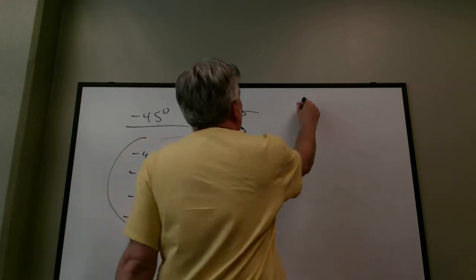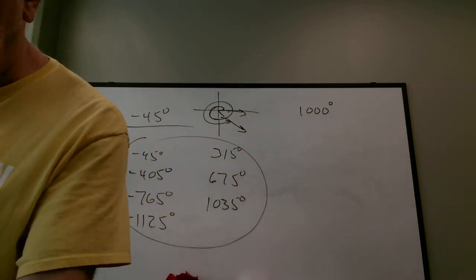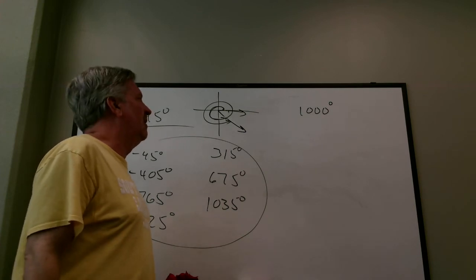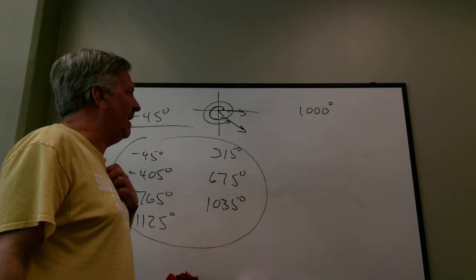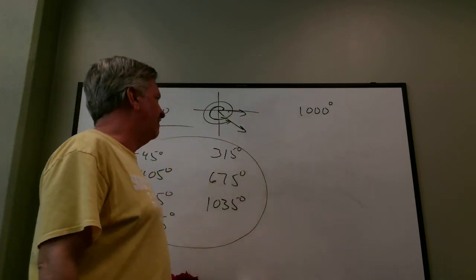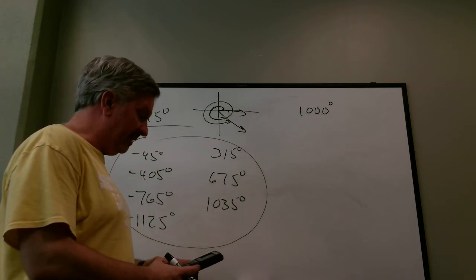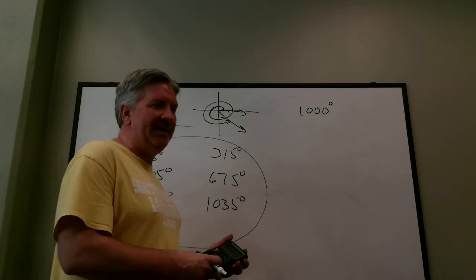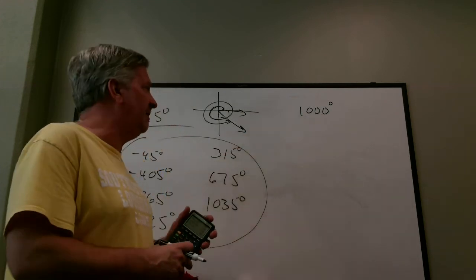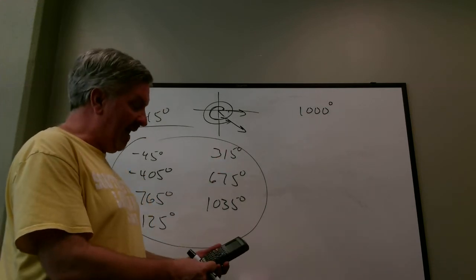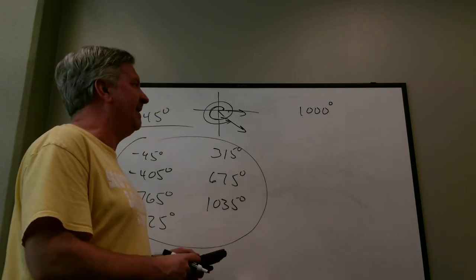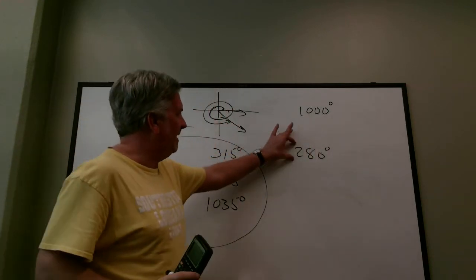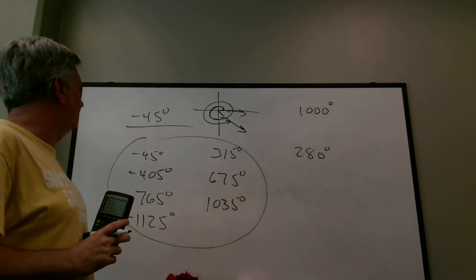Next: find the smallest positive angle coterminal with 1000 degrees. Adding 360 makes it bigger, so subtract. 1000 minus 360 is 640; subtract another 360 to get 280. Subtracting one more 360 would give a negative, which isn't positive. So 280 degrees is the smallest positive angle coterminal with 1000.